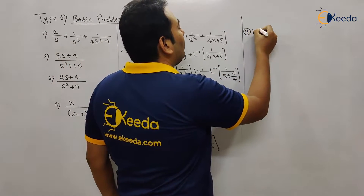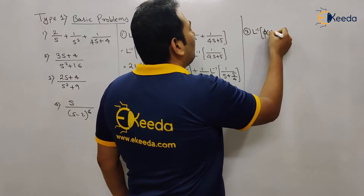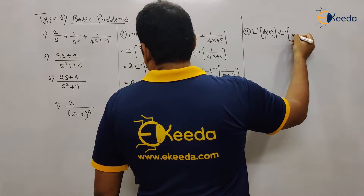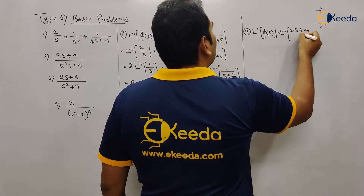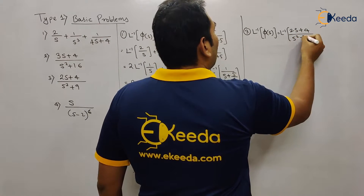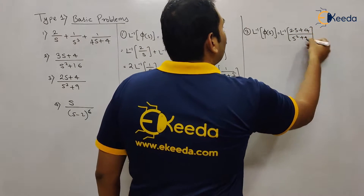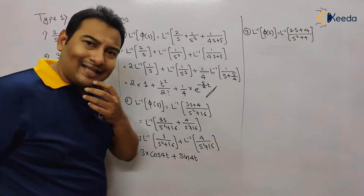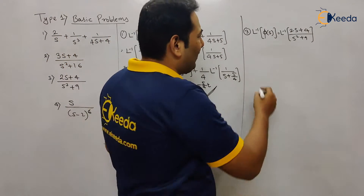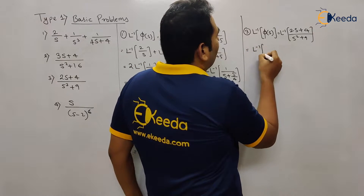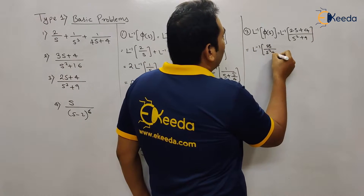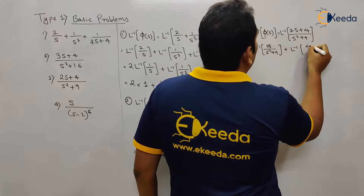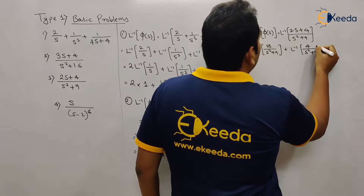Problem number three — similar to problem number two. It's recommended you solve this by yourself: pause the video, solve the problem, and verify your result. We have 2s+4 upon s²+9. Same approach: separate into 2s/(s²+9) + 4/(s²+9).